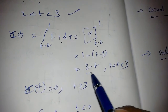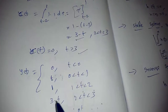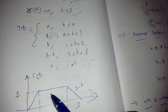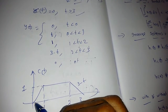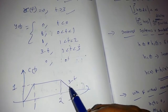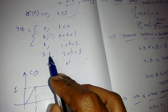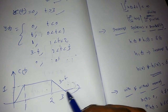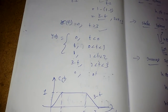Evaluating that integral gives 3-t. For t > 3 there is no common point, so c(t) = 0. Summary of c(t): 0 for t<0; ramp t for 0 to 1; constant 1 for 1 to 2; ramp 3-t (negative slope) for 2 to 3; and 0 after 3. Next lecture we will see properties of LTI systems.